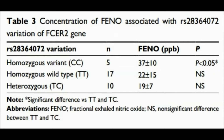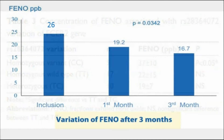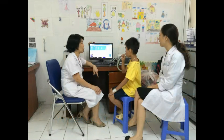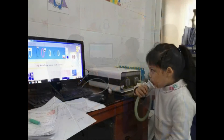Interestingly, in this group, the level of FeNO was highest at 37 parts per billion. In our research, we found that the level of FeNO was significantly decreased after 3 months of treatment with inhaled corticosteroids, from 26 parts per billion down to 17 parts per billion. We also observed significant correlations between inhaled corticosteroid dose, FeNO level, ACT score, and daily use of salbutamol.